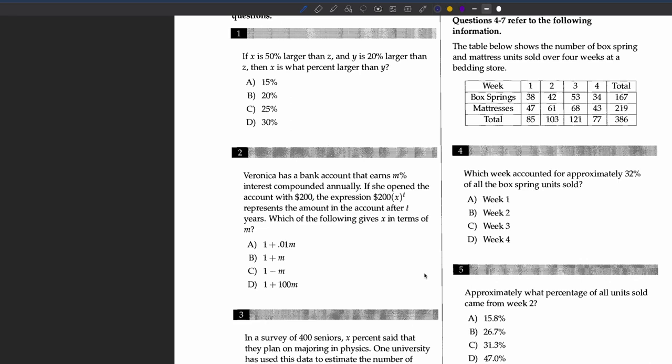The answer is a. Because each year Veronica keeps whatever she has in her account, additionally there's an added interest on that amount. Because m is a percentage, we can convert it into decimal place by dividing it by 100, which will give us 0.01m. Thus the answer is a.